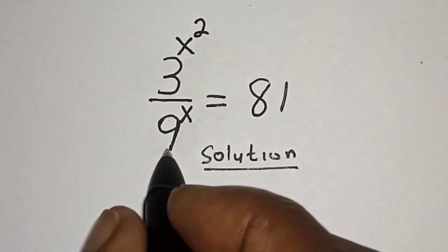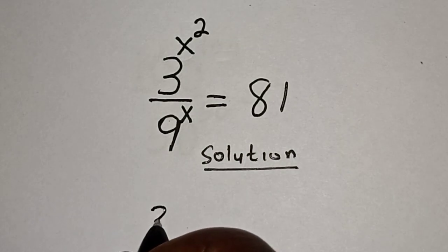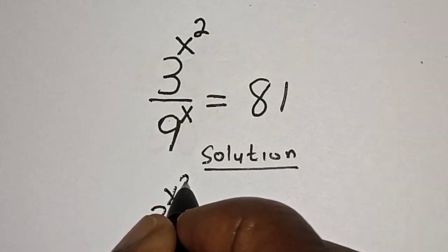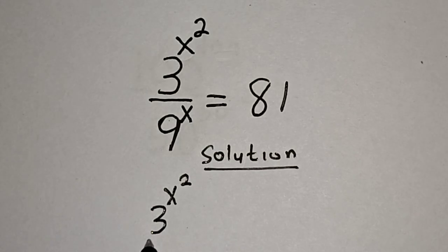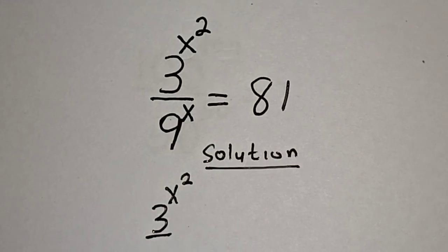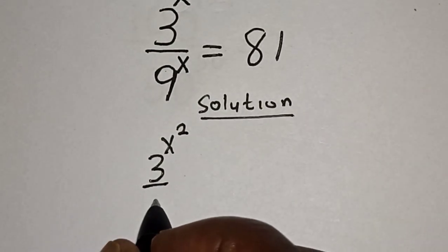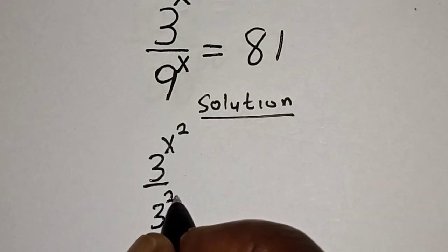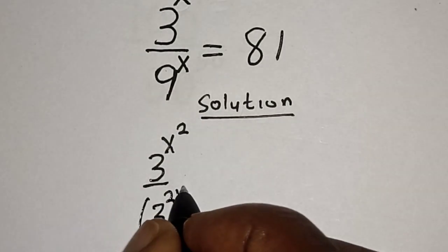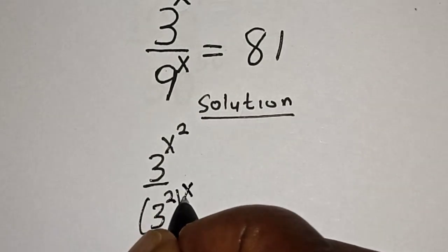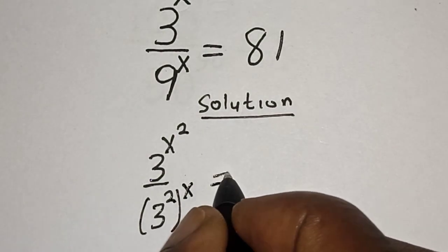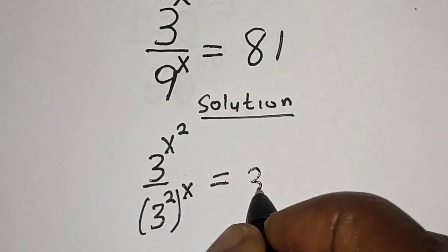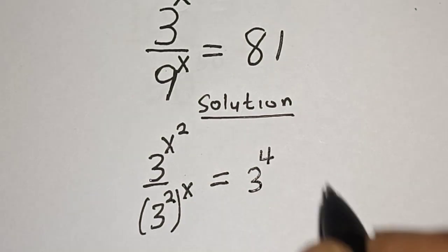We have the given equation: 3 raised to power x squared, divided by 9 raised to power x. Here, 9 can be written as 3 squared, raised to power x, and 81 is equal to 3 raised to power 4.